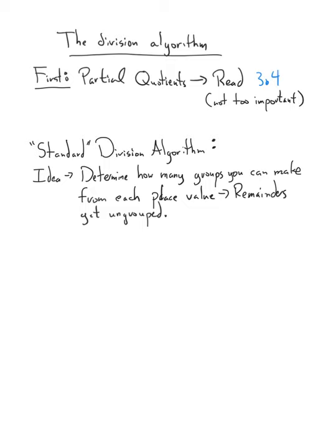So our standard, or what's usually called long division algorithm, is basically a very similar idea of how we do multiplication, or even addition and subtraction. We're using the idea of place value intelligently. What we're doing is we're going to separate our number in some sense into its separate place values and ask how many groups we can make just from that place value. And the remainders will get ungrouped to the next place value down. So let me do a quick example here.